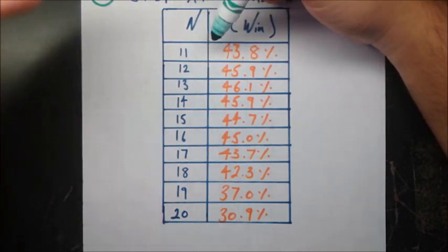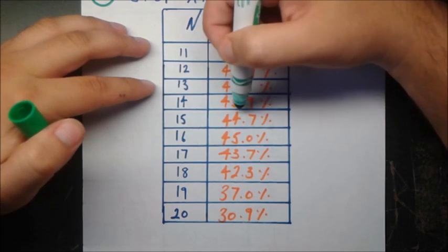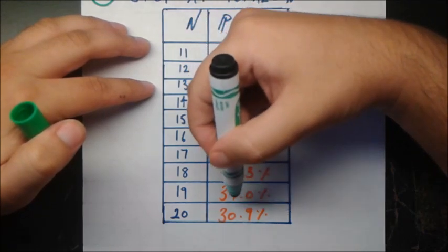So the top one, this n equals 11, very, very low, is 43.8%. So then it's going up, it's going up, it's going down, down, up, down, down, down, down.